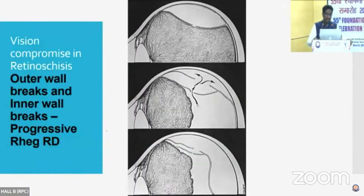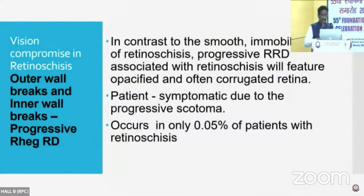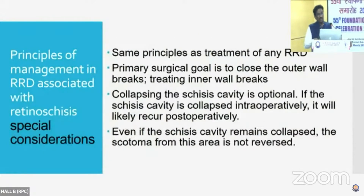The next is progressive retinal detachment, wherein there will be breaks in both the inner layer and the outer layer, and then the fluid enters into the subretinal space, leading to a retinal detachment. This behaves like a rhegmatogenous retinal detachment and you can see the corrugated retina in these patients. However, this is very rare, happening in only 0.5% of patients with retinoschisis. The patient becomes symptomatic because of the progressive scotoma. The treatment is same as for any rhegmatogenous retinal detachment — the main surgical goal is to close the outer retinal wall breaks, and you should treat the inner wall breaks also.